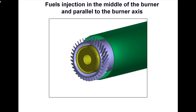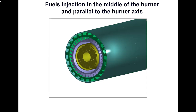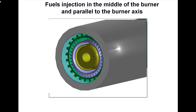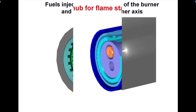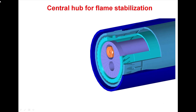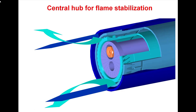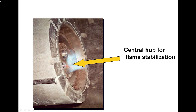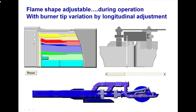You can see in the picture the stepwise engine heat capacity center. There is a hub for flame stabilization. The flame shape is adjustable during operation with a burner tip variation by longitudinal adjustment.